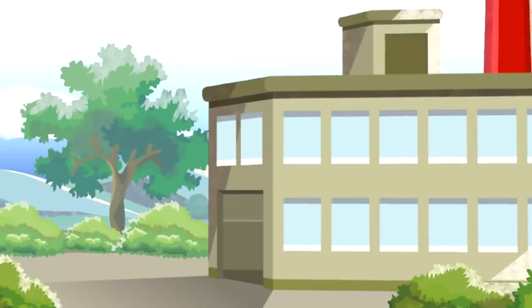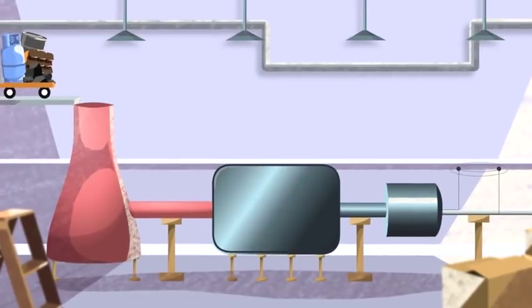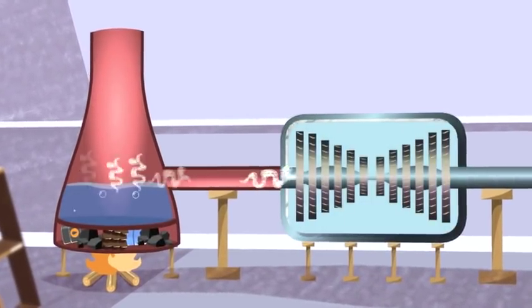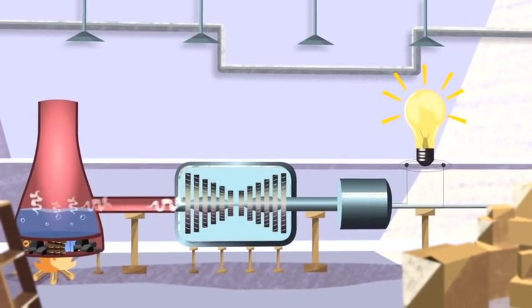When fossil fuels are burned in the power station, they release a chemical energy inside them, which then turns to heat energy. This energy is used to boil water and create steam, which is used to turn turbines, which generate electricity.